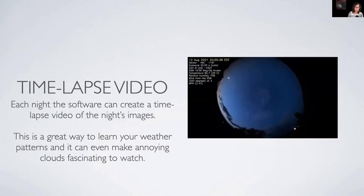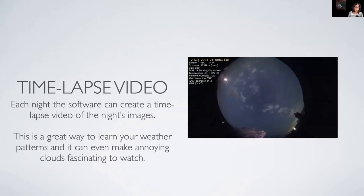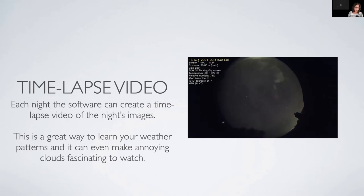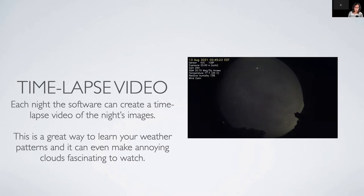Time-lapse videos are basically taking each image from the night and putting them together. It's a good way to see what happened during the course of the night. Those flashes at the bottom of the screen are from cars driving by and illuminating a tree on our property. You can see things were pretty cloudy at the beginning of the night, then it almost cleared up, and then we're back into the clouds. One of the cool things about the all-sky camera is it makes the clouds almost tolerable — it makes them interesting.